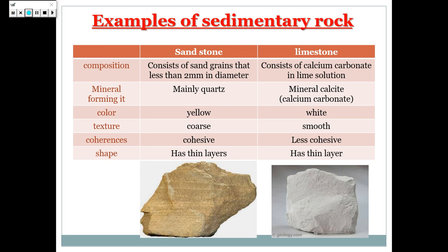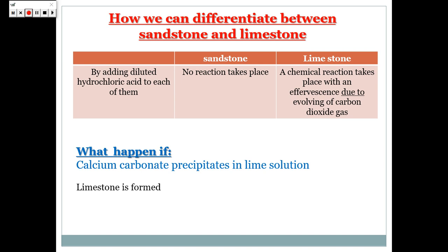Sandstone is cohesive, while limestone is less cohesive. Both sandstone and limestone have thin layers. We can differentiate between them by using hydrochloric acid. By adding hydrochloric acid to sandstone, no reaction will happen. But when we add hydrochloric acid to limestone, a chemical reaction will happen, and effervescence occurs due to the evolving of carbon dioxide gas. So, if asked what happens when calcium carbonate precipitates in lime solution, the answer is: limestone is formed.